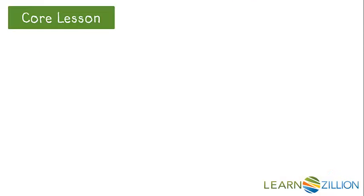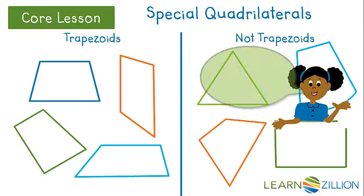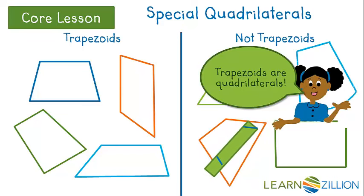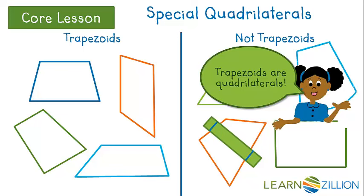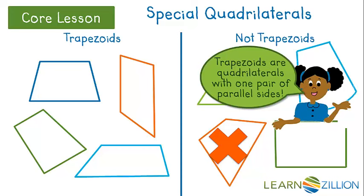Let's revisit our groups. We know that trapezoids are quadrilaterals. Does this shape on the right have parallel sides? No, it does not. Now we know trapezoids are quadrilaterals that must have one pair of parallel sides.